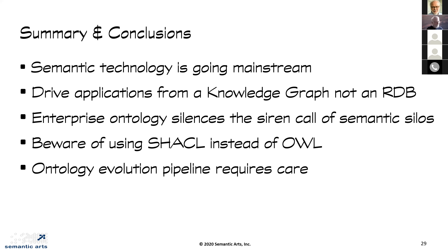Todd asks: based on what's been presented, should we presume Semantic Arts has a working definition of knowledge graph? Michael responds: we build triple stores backed by an ontology — knowledge about a subject area — and we call it a knowledge graph. We don't worry too much about definitional details. When we talk about knowledge graph, we mean an ontology set of triples plus data triples plus maybe taxonomy triples all lumped together in a triple store. The summit's goal was to promote a consistent definition, which is why the question was asked.